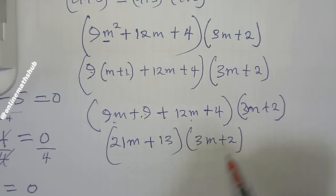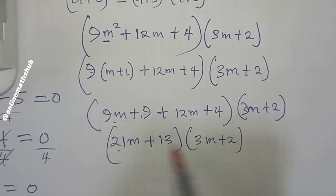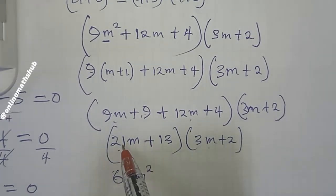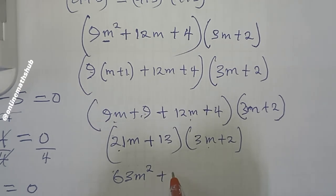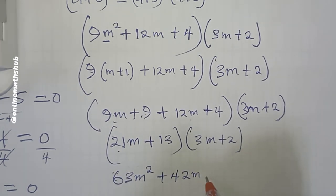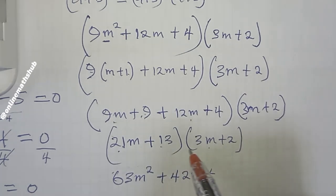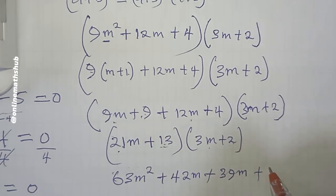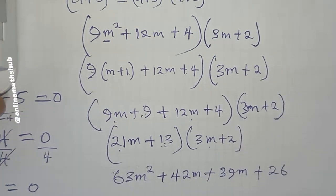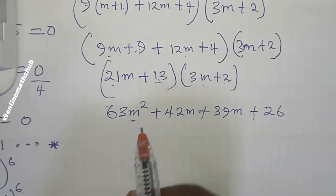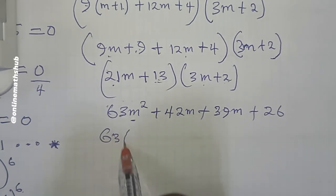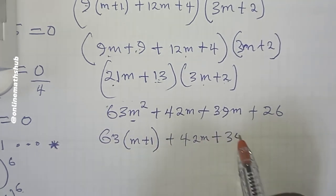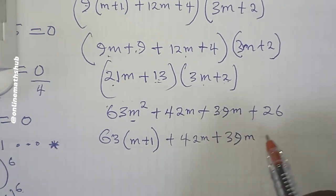Multiplying (21m + 13)(3m + 2): 21m times 3m = 63m²; 21m times 2 = 42m; 13 times 3m = 39m; 13 times 2 = 26. So we get 63m² + 42m + 39m + 26. Substituting m² = m + 1 gives 63(m + 1) + 42m + 39m + 26.